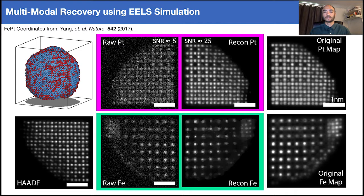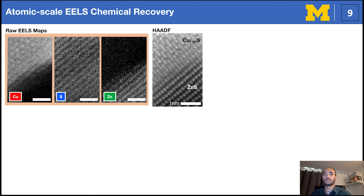Returning to atomic resolution EELS, we further demonstrate fused multimodal electron microscopy on a zinc sulfide-copper sulfide hetero interface. Lattice planes in the raw EELS maps are slightly visible, especially for the zinc sulfide components. However, with fused multimodal electron microscopy, we can recover individual atomic columns.